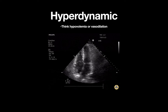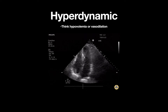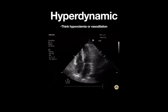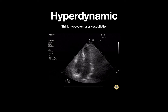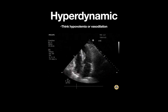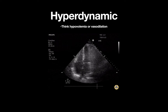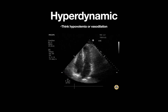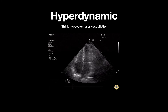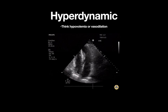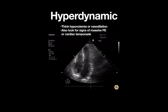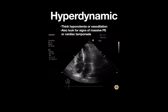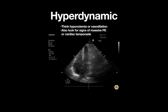While a hyperdynamic left ventricle frequently suggests hypovolemia or vasodilation, other etiologies that can severely decrease preload or afterload should also be considered, many of which will have accompanying abnormal findings on cardiac ultrasound, such as massive pulmonary embolism or cardiac tamponade.